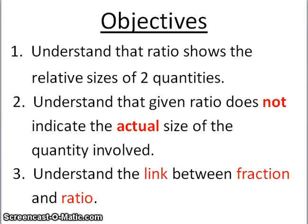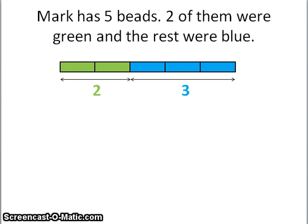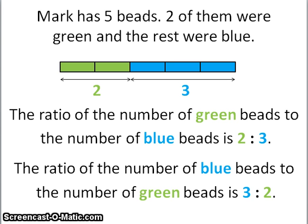Let's look at an example. Mark has five beads. Two of them were green and the rest were blue. By looking at the model, you will be able to see that two parts are shaded green and three parts are shaded blue. This is how you write the ratio statement: the ratio of the number of green beads to the blue beads is 2 to 3. You can also write it the other way around: the ratio of the number of blue beads to the green beads is 3 to 2.